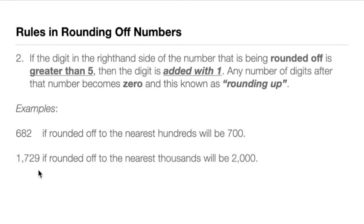Another example: 1,729. If this number is rounded off to the nearest thousand, the thousands digit is 1, and the number to the right of it is 7. Since 7 is greater than 5, we add 1 to this 1, giving us 2,000. All digits to the right become 0. That's simply rule number 2.